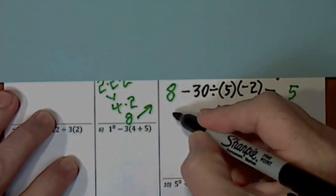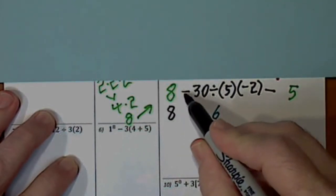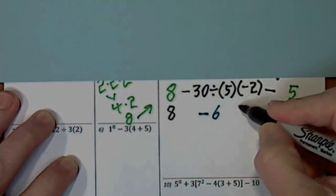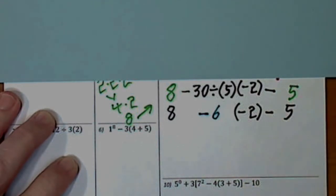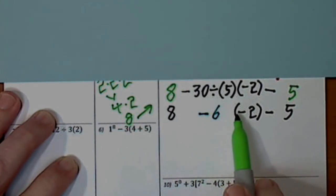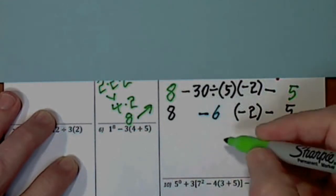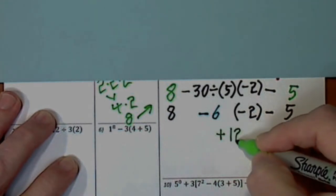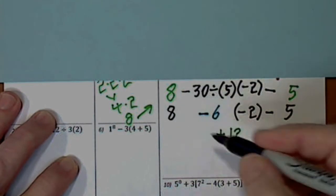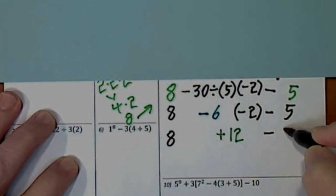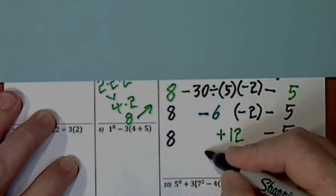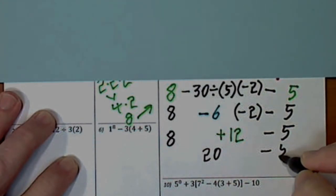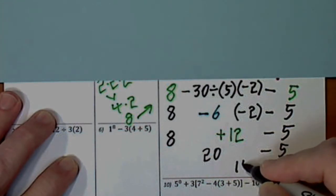Proceeding left to right again — this indicates multiplication, a number next to parentheses. Negative 6 times negative 2 is positive 12. Bring down whatever I have not used. Combining 8 and 12 gives 20. Bring down the negative 5. Combine these last two and we get 15.